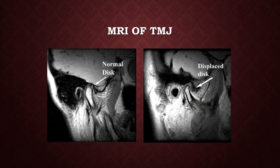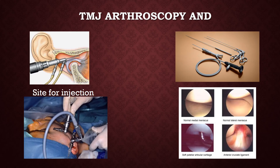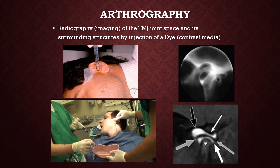MRI of the TMJ is specifically reserved to view the disc. This is a comparison of a normal disc on MRI and a displaced disc — you can see the soft tissue component which is displaced anterior to the condyle. Arthroscopy of the TMJ is less opted these days as it is a very painful and technique-sensitive procedure. Arthrography involves injection of radio-opaque contrast dye to evaluate the joint space, but it is of less significance today and is largely replaced by MRI and CT images.